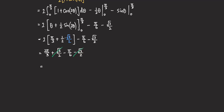Distributing the factor of 2, we get 2 pi over three plus the two and one half cancel to give root three over two. Subtracting pi over six and minus root three over two, the root three over two terms cancel. We are left with 2 pi over three minus pi over six. Getting a common denominator of six: four pi over six minus pi over six equals three pi over six, which simplifies to pi over two. So A equals pi over two.